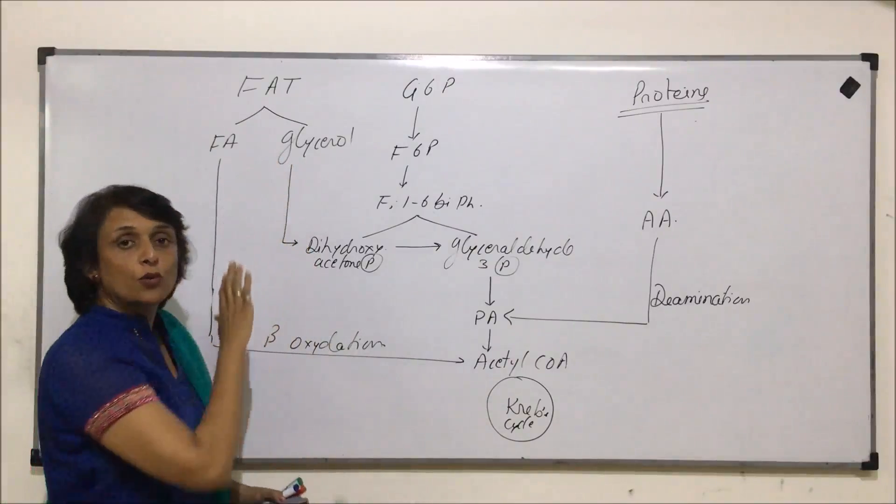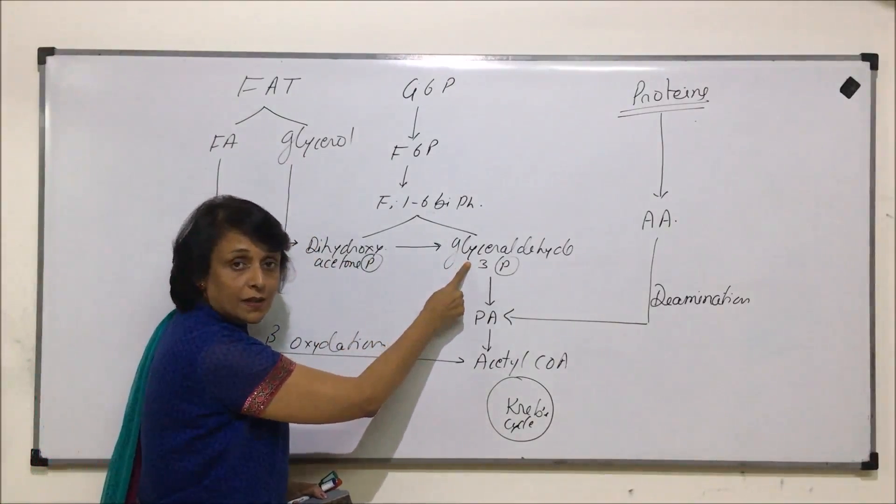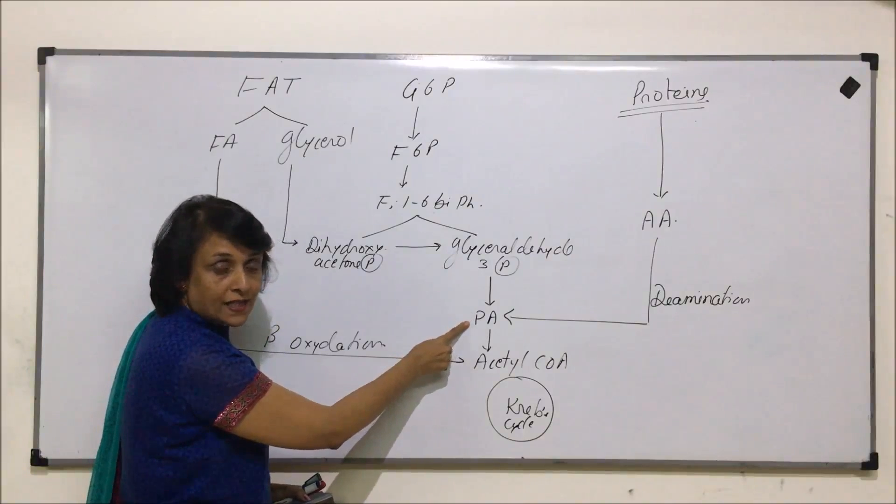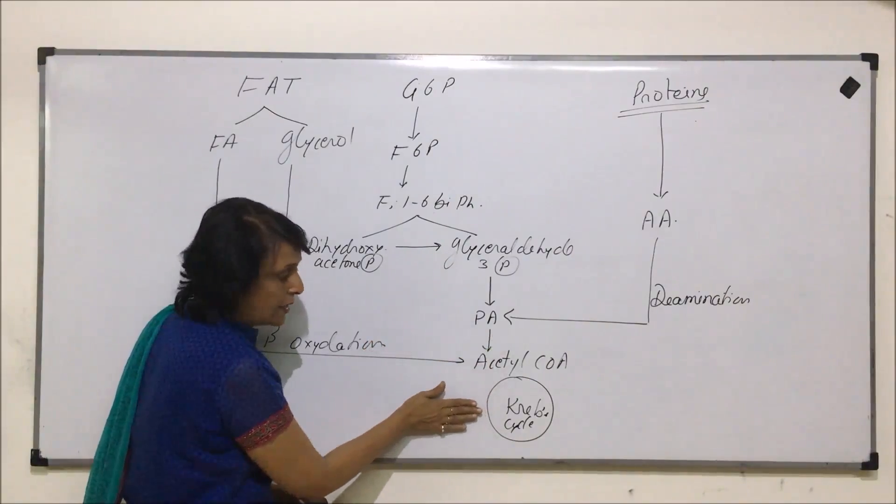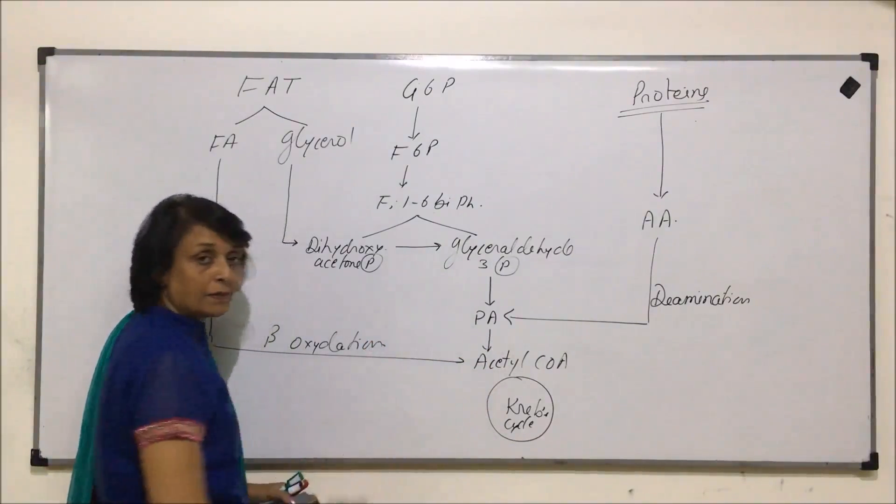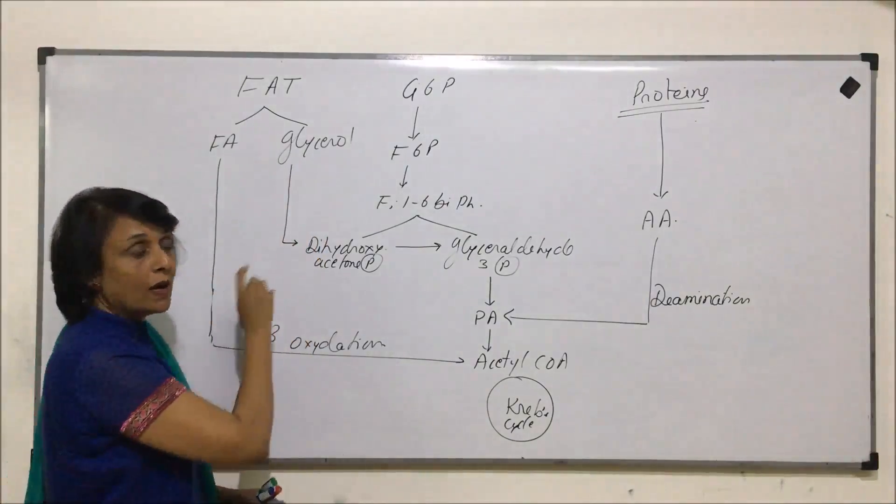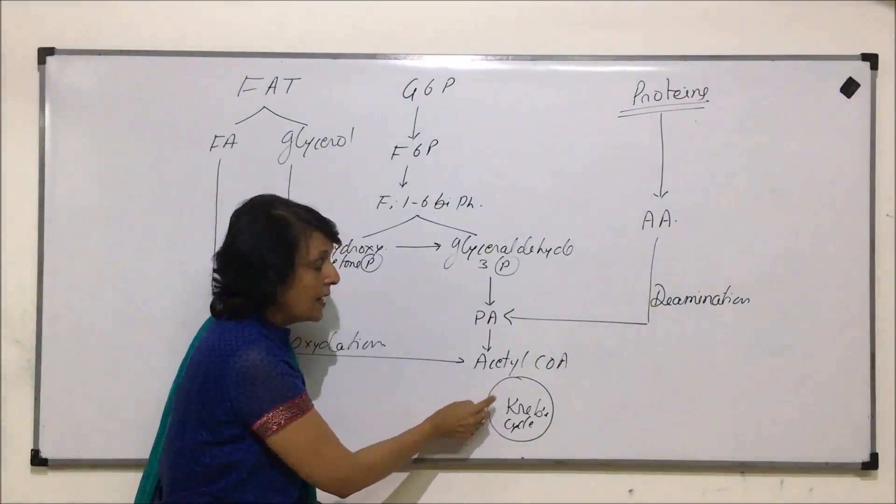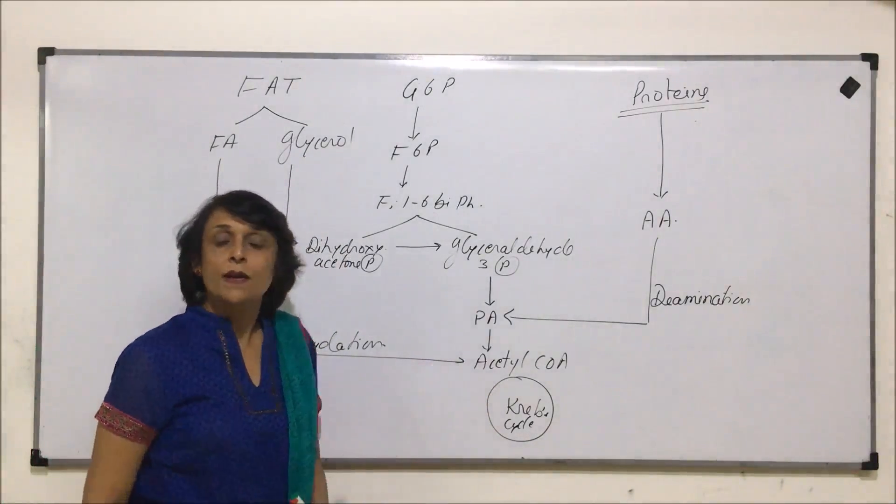So if it is a monoglyceride fat and we get one glycerol, it will join at glyceraldehyde 3-phosphate. So whatever we gain up to pyruvic acid, we got two ATPs and one NADH. Here one NADH and 12 ATP from Krebs cycle. So this is the total outcome coming from one glycerol. And one fatty acid will join at acetyl coenzyme A and this will be followed only by Krebs cycle. So 12 ATP from Krebs cycle.